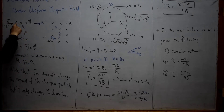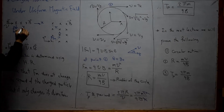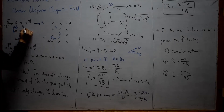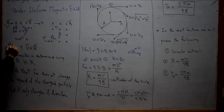At any point along this path, the velocity has two components: a component in x and another component in negative y.